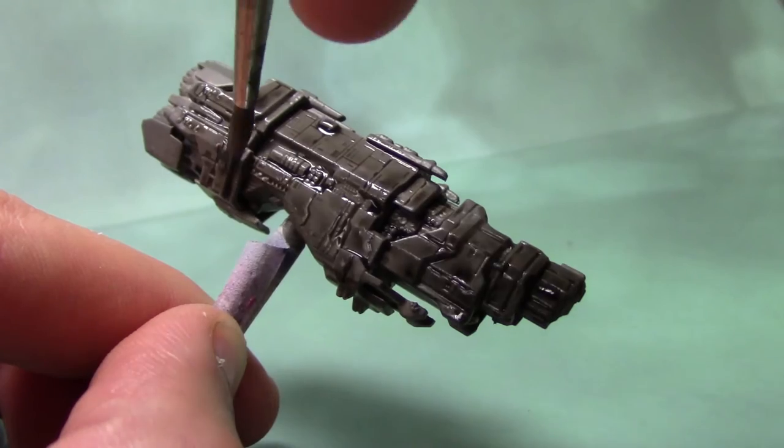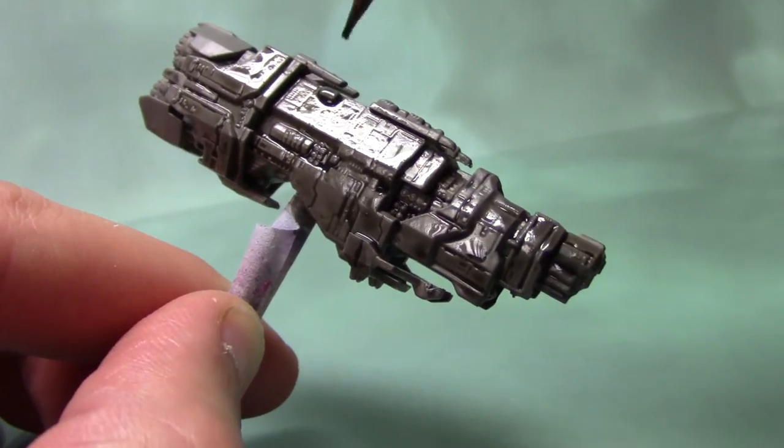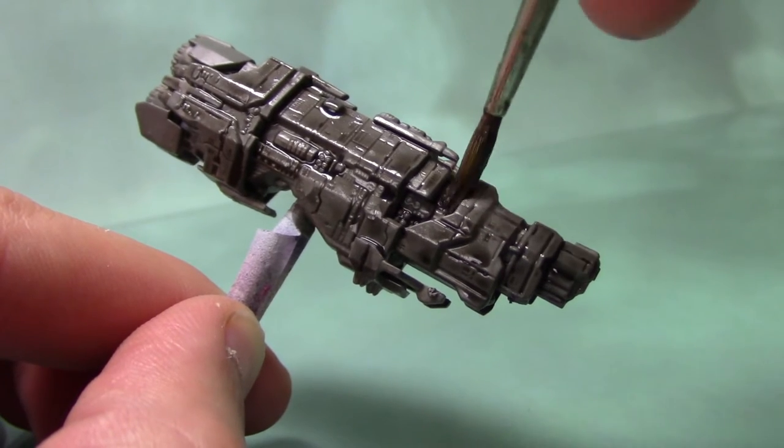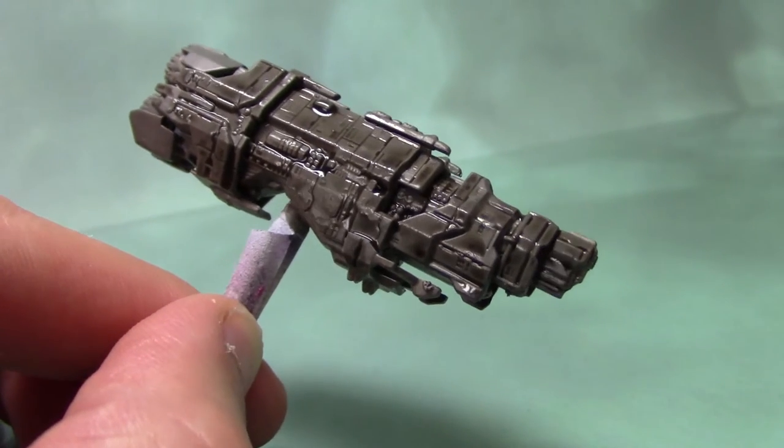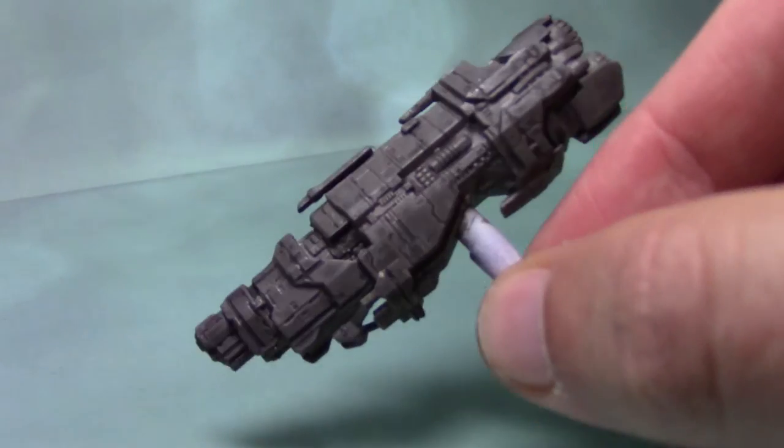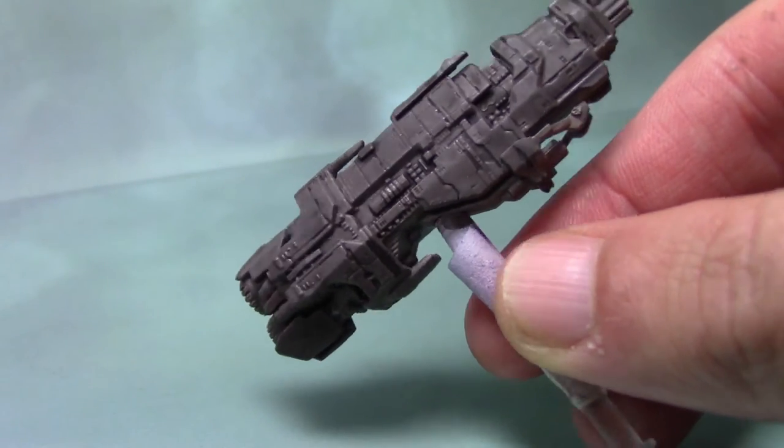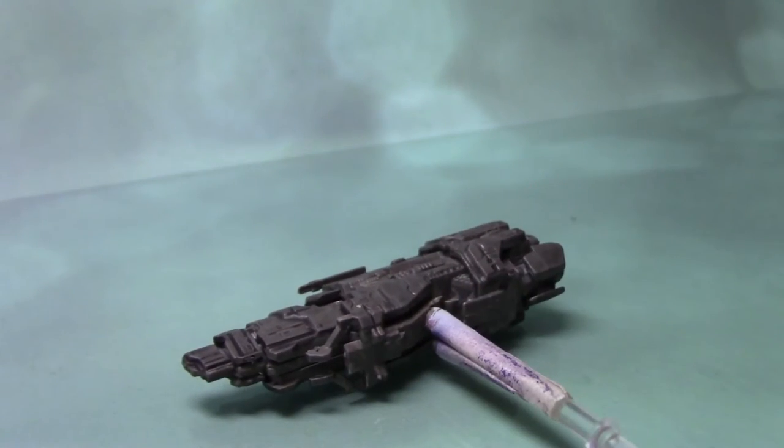It will take a little while to dry as it's only a wash, so I left it for about 20 minutes before moving to the next step. With that dry, the ship is a lot darker but all these recesses are now black, making all the panels really stand out.